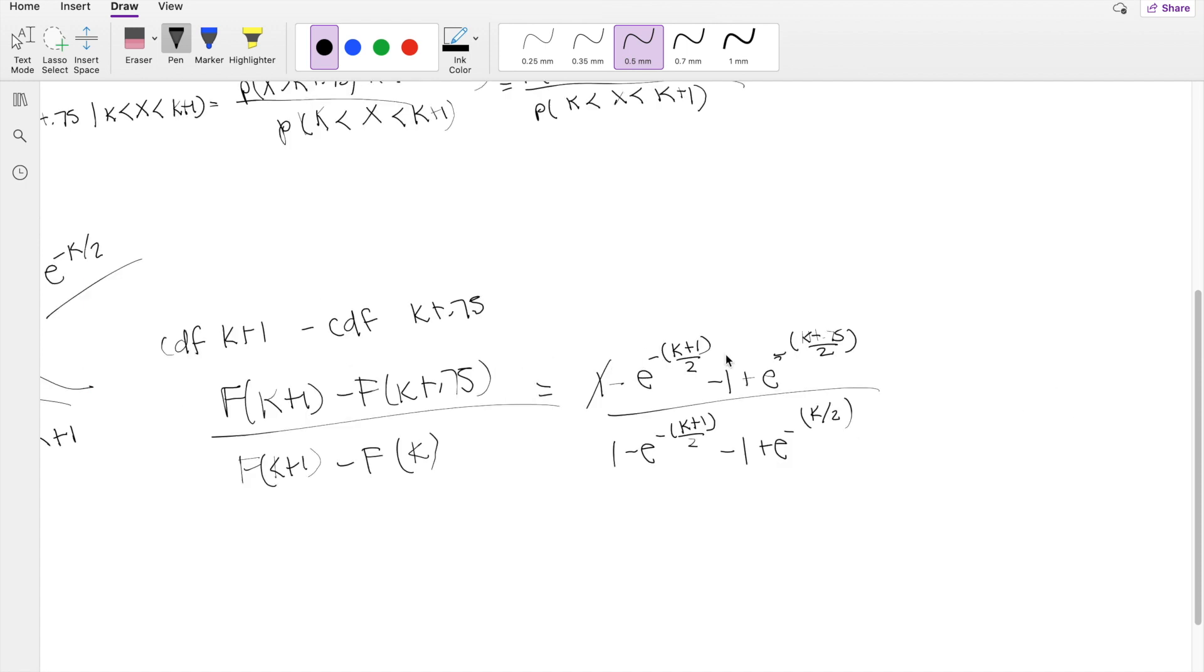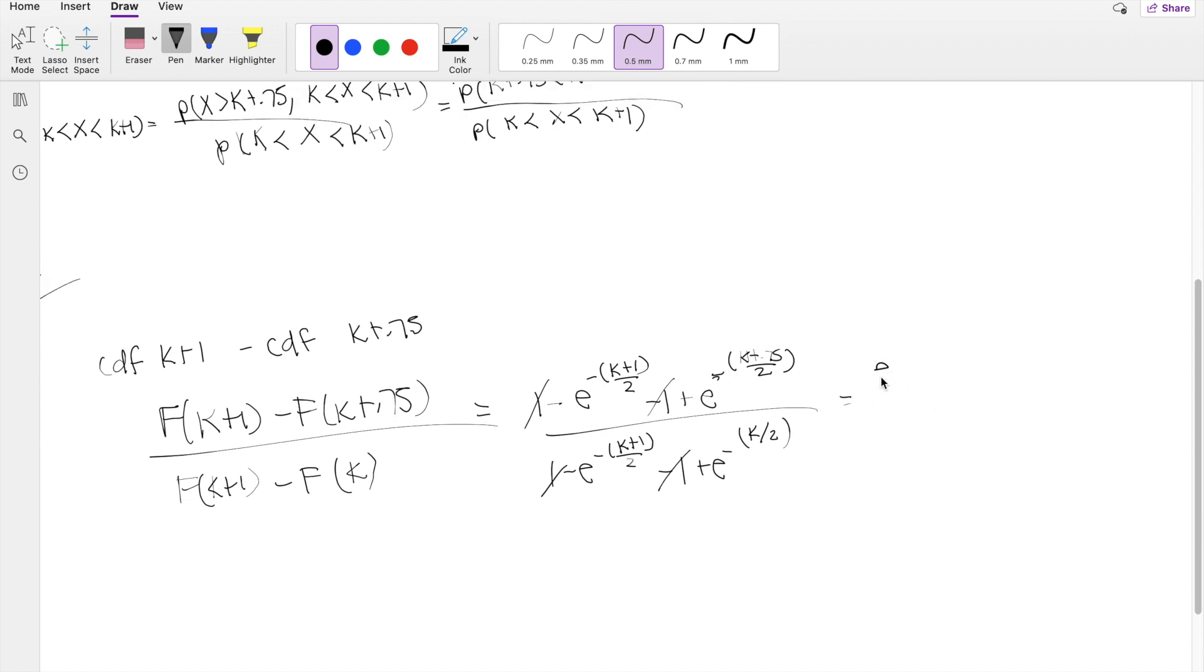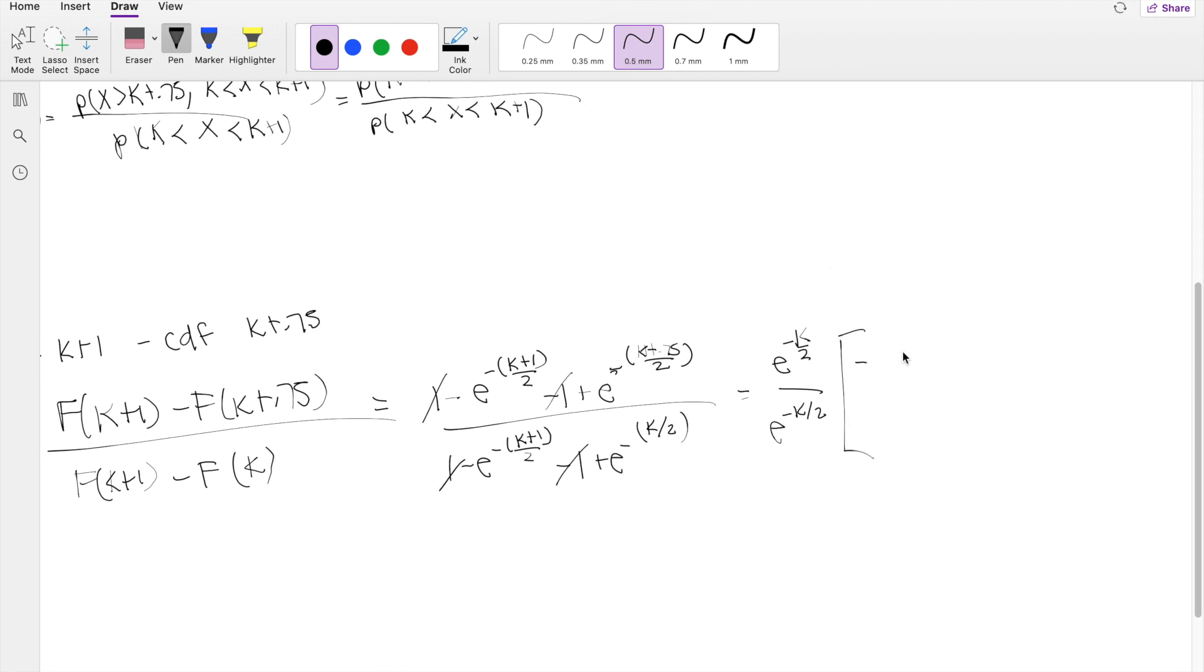So then the 1's cancel out, 1 minus 1 is 0, 1 minus 1 is 0 here, and I'm actually going to factor out e to the negative k over 2 from the top and at the bottom. So when I factor it out from the top, you're going to get minus e to the negative 1 half plus e to the negative 0.75 over 2.